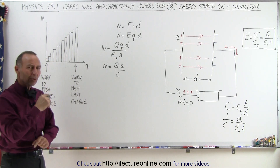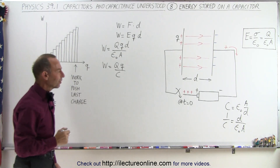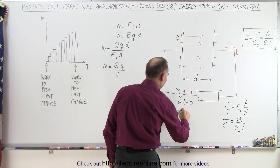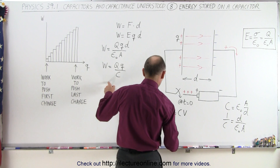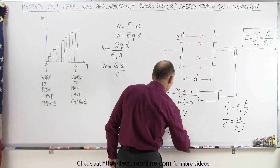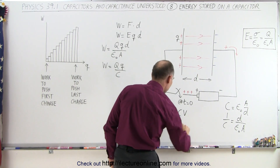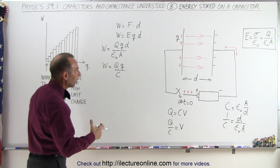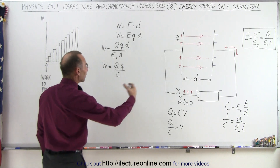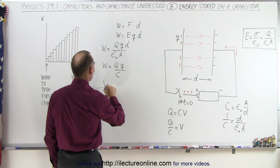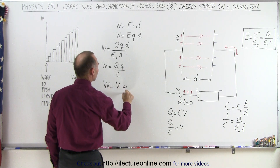Now, Q divided by C also reminds us of something, because when you put charge on the capacitor, Q equals C times V — so Q divided by C equals V. That's equal to the voltage on the capacitor or applied to the capacitor. So Q divided by C can be replaced by V, and the work done is equal to V times q.